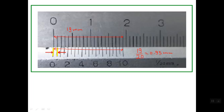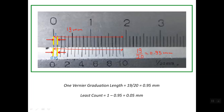So the Vernier division is less than 1 mm by 0.05 mm. This distance is 0.95 mm. Regarding the corresponding distance on the main scale, it is simply 1 mm. So one Vernier graduation length equals 19 divided by 20, which is 0.95 mm. Therefore the least count is 1 minus 0.95, which is 0.05 mm — the least count.